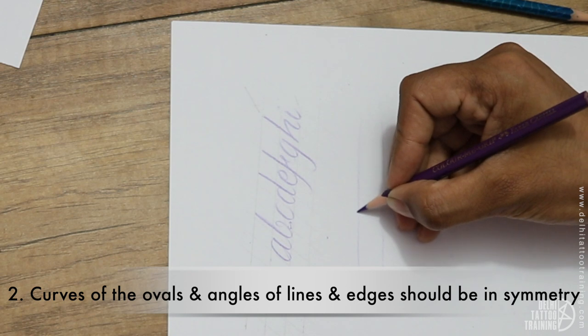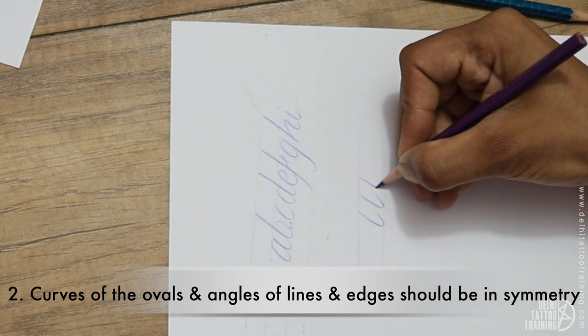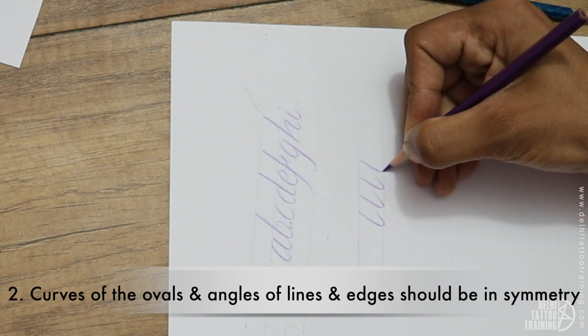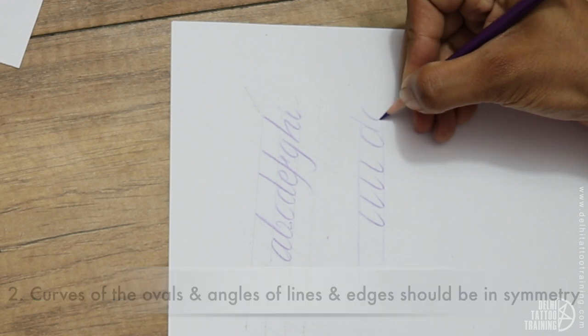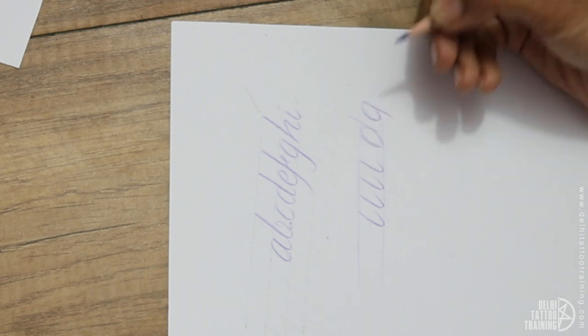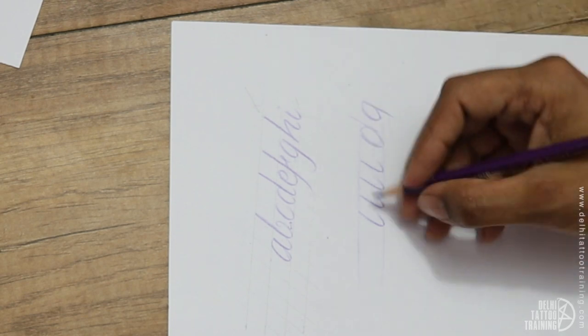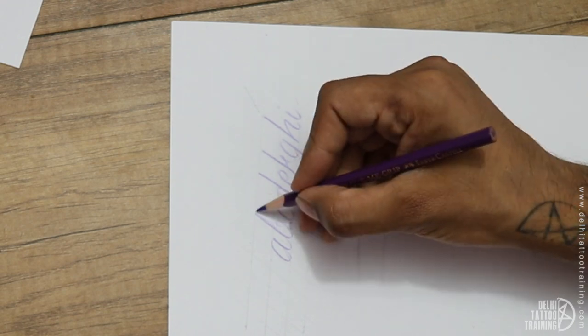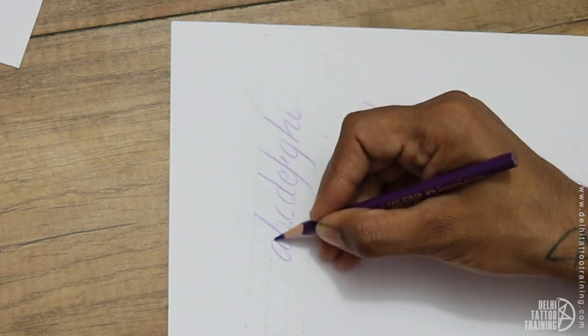Coming to the second point: the curves of the ovals and the angles of the edges should be in symmetry. Here I have drawn a couple of I's. Now I am demonstrating a D and a G. Now if you see, the D is more like a circle and the G is more like an oval. I have to ensure that they have to be the same. The height of these should be the same and the body should also lie not beyond the mean line.